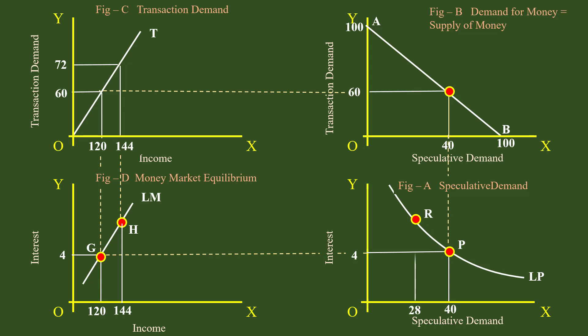Now speculative demand for money is 28 rupees. The surplus money, 12 rupees is transferred through transaction motive. Total demand for money is 72 rupees plus 28 rupees. 100 rupees is equal to supply of money 100 rupees.